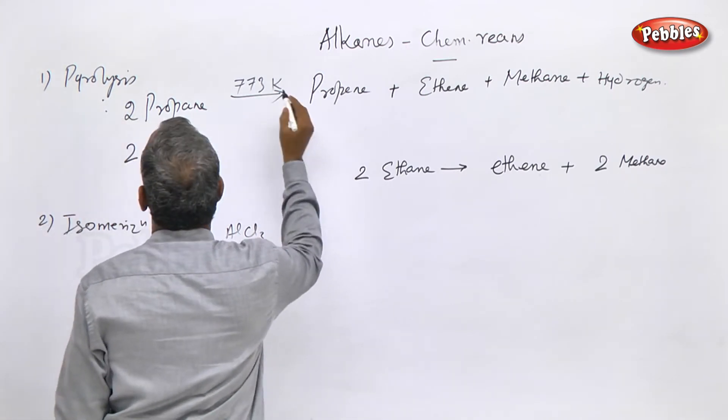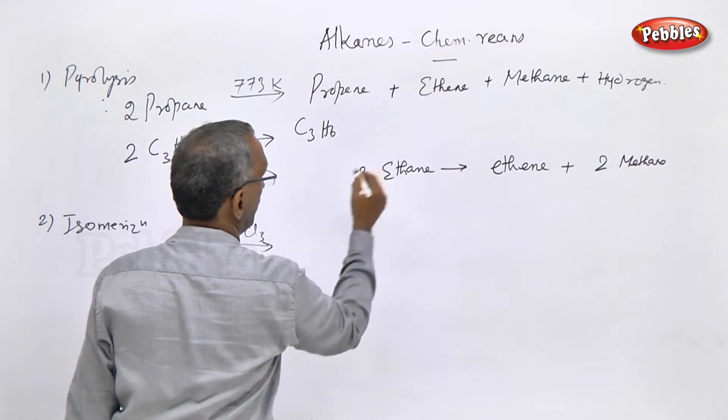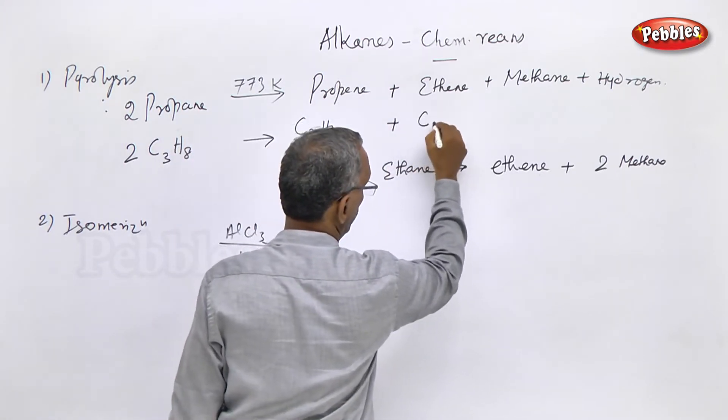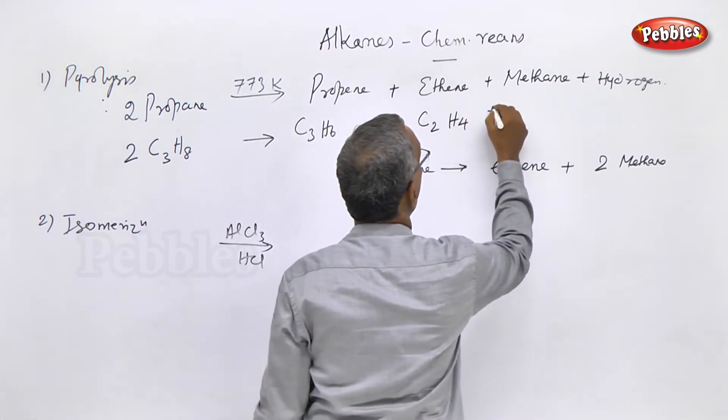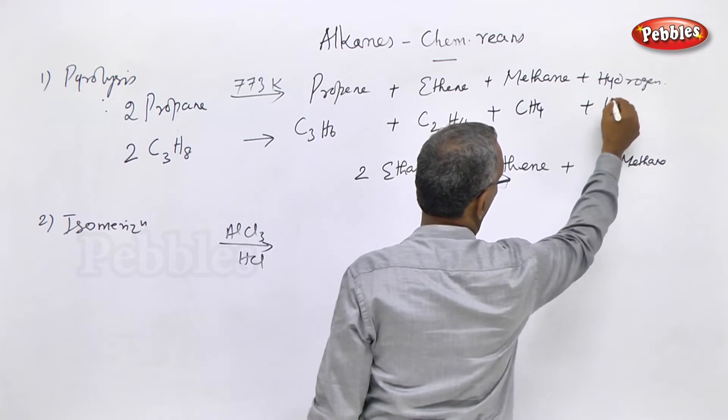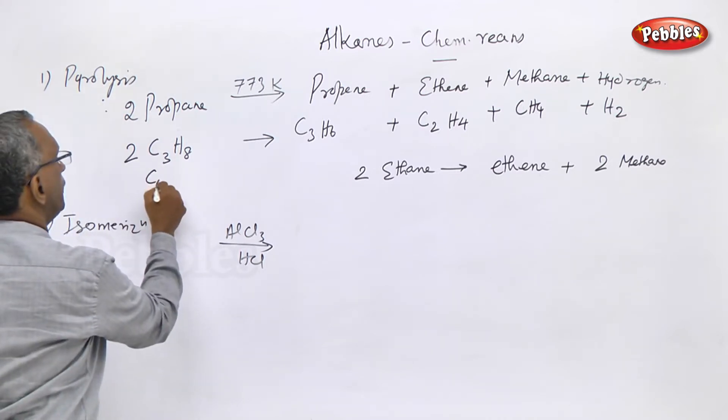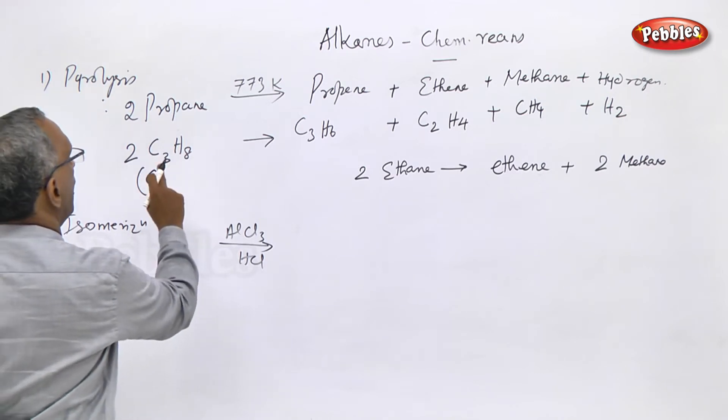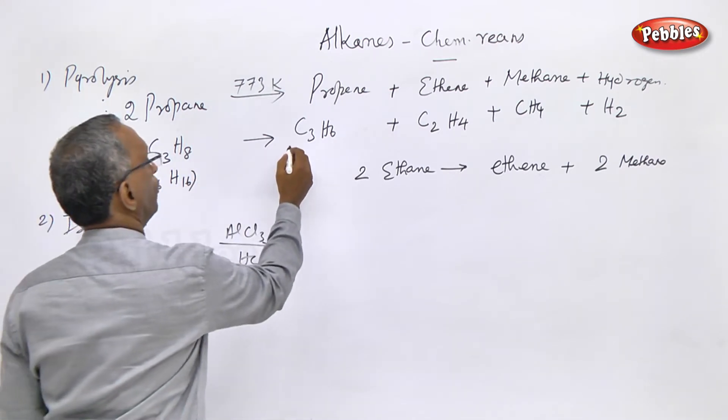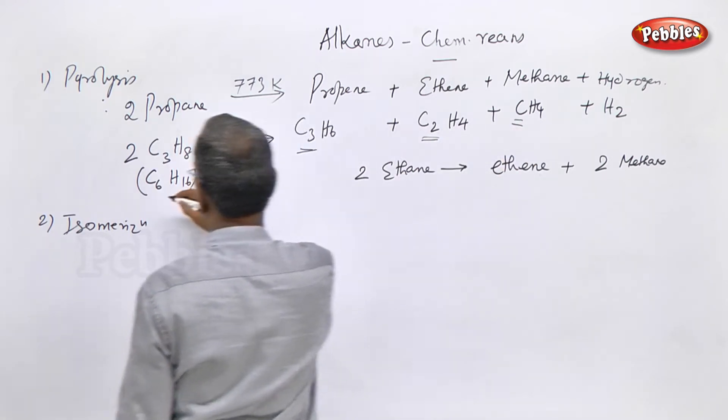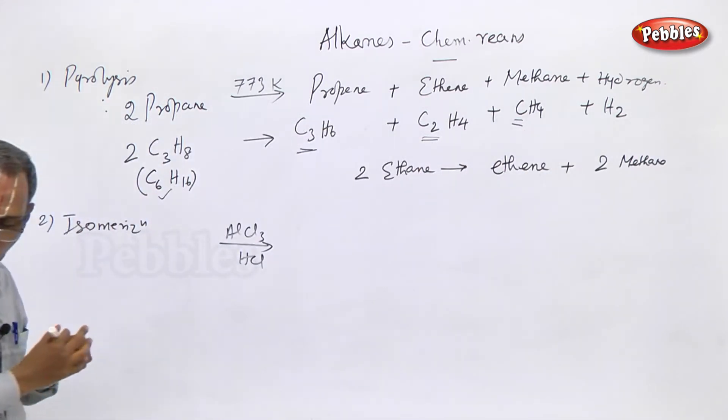Pyrolysis yields first propene C3H6, ethene or ethylene C2H4 which is a two carbon alkene with formula CnH2n, methane CH4, and hydrogen gas H2. The carbon count: 3 plus 2 is 5 plus 1 equals 6 on both sides.